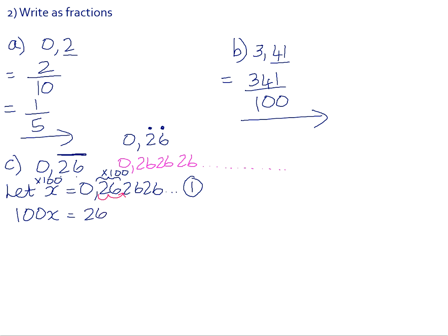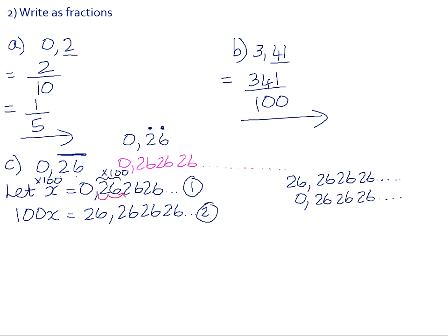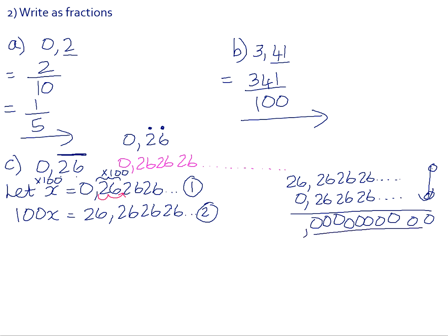100 times x is 100x, and 0.2626 times 100 moves the decimal 2 units to the right, giving us 26.2626 etc. If we had only multiplied by 10 we'd have 2.6262, which changes the order of the decimals and wouldn't be useful. Now to eliminate the recurring decimal places, we subtract the two equations: 26.2626... minus 0.2626... At infinity those decimal parts are the same number, so any number minus itself is 0. All the recurring decimal places disappear, leaving just 26.